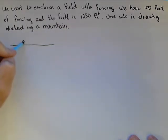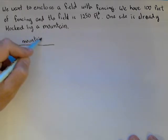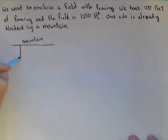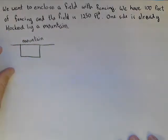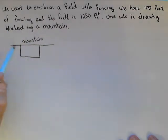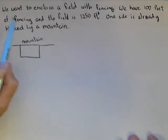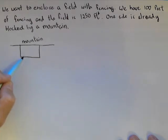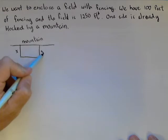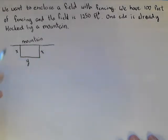So, let's draw a picture of what's going on and label some variables. So here's our mountain, and it's going to be a rectangular field. This is going to be a rectangular field. These two sides will be the same, but this side doesn't necessarily have to be the same size. So, we can use the same variable for these two sides, but we need to use a different one for this side.